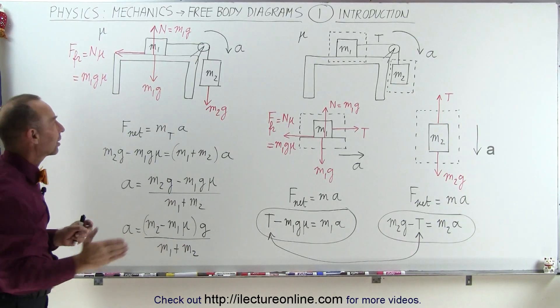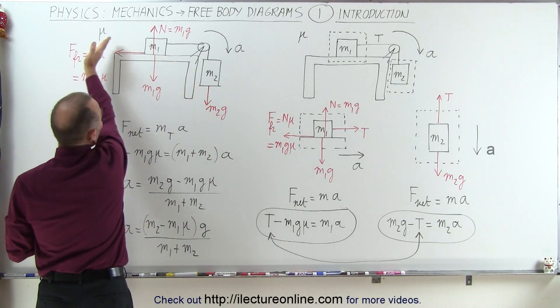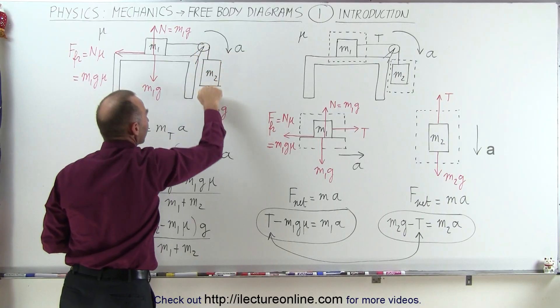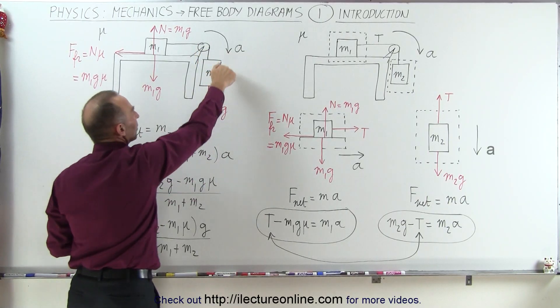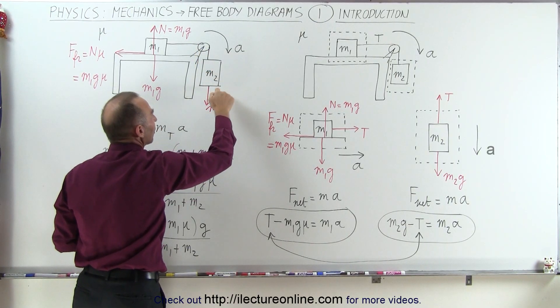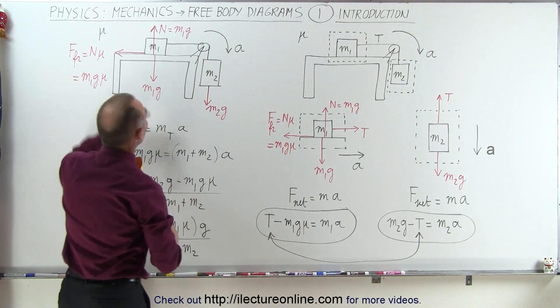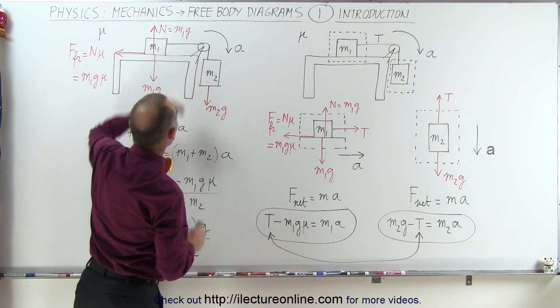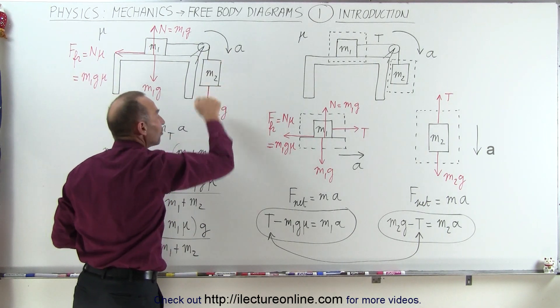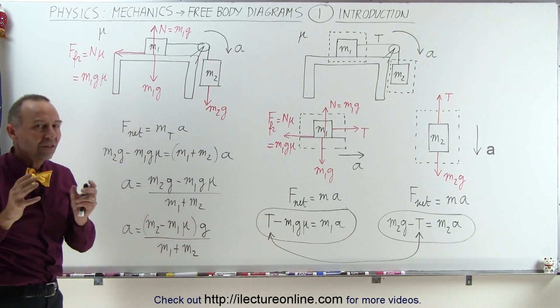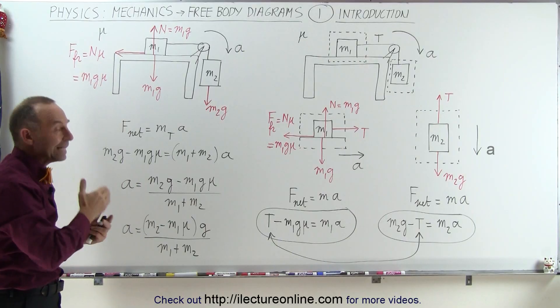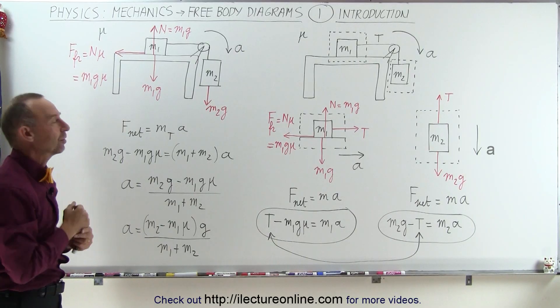Now here's the trick. Notice that this block is accelerating to the right and this block is accelerating downward. That doesn't mean that this is a negative acceleration. We just simply say that the direction of acceleration is positive and so over here to the right is positive, over here down is positive. So positive is in the same direction as acceleration, negative is in the opposite direction of the acceleration.